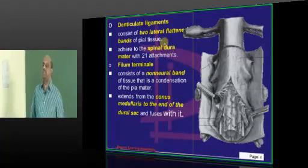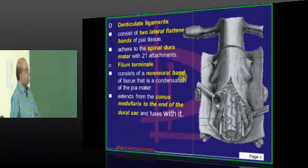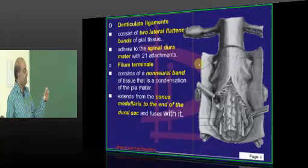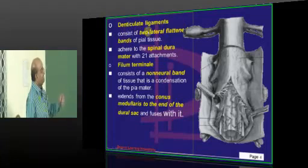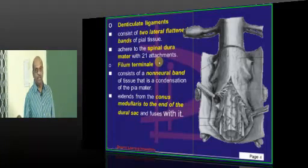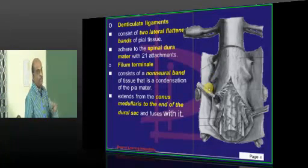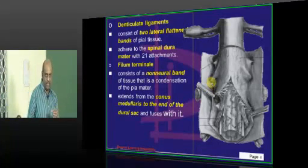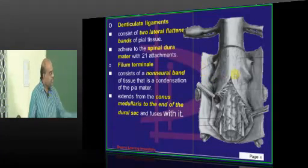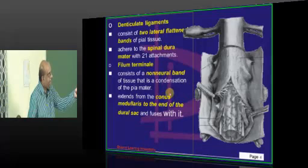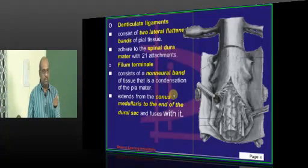Denticulate ligaments are the structures we need to know in relation to pia. What are they? The pia tissue typically becomes flattened and forms band-like structures which are called denticulate ligaments. These denticulate ligaments will adhere to the spinal dura mater. Between pia and dura they form 21 locations of attachment.